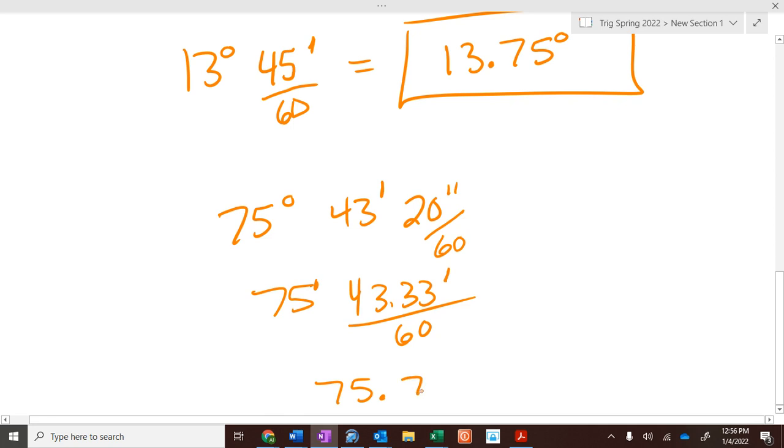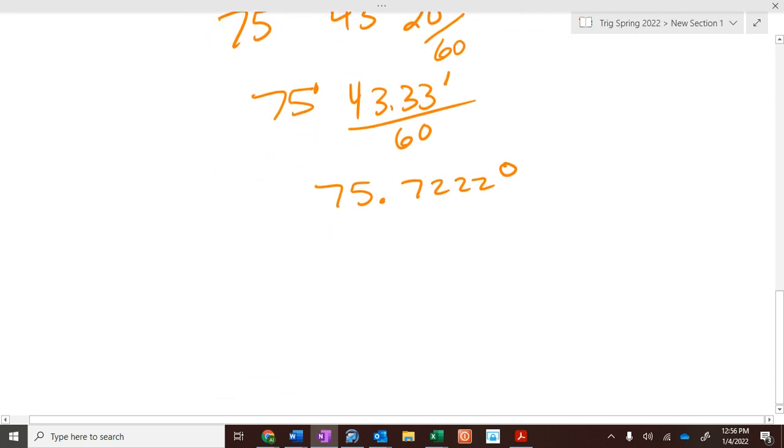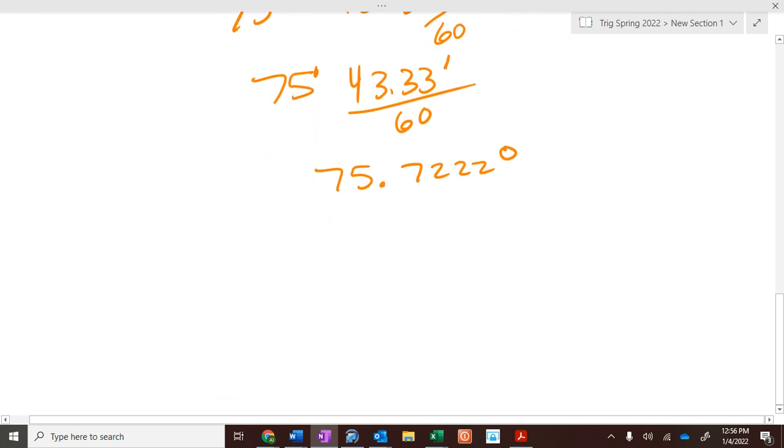43.33 divided by 60 is? Give me four. .7216? 7, 2, 2, 1, 6. So, 75.7222 degrees. So, that's dealing with putting degrees, minutes, seconds into terms of decimals.